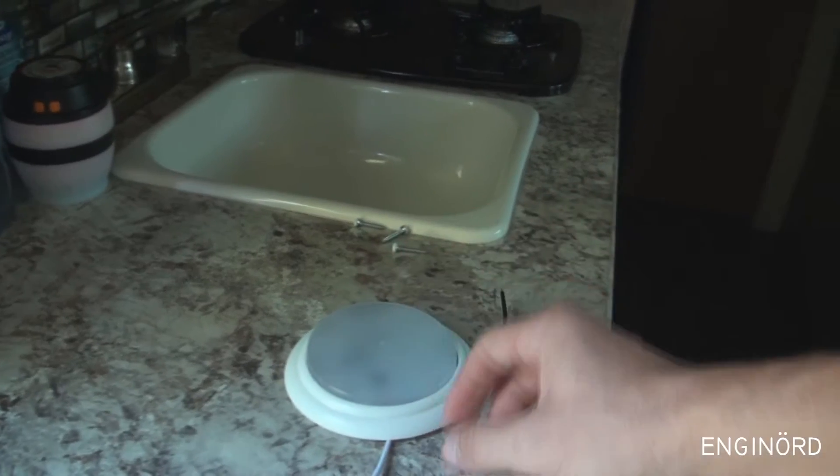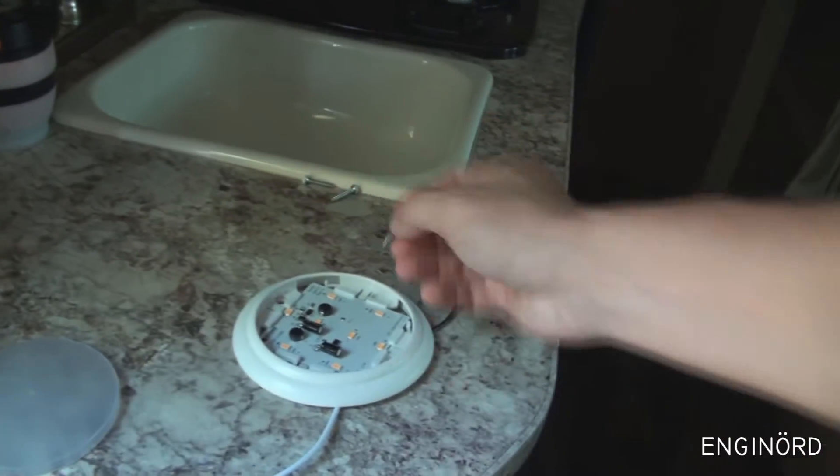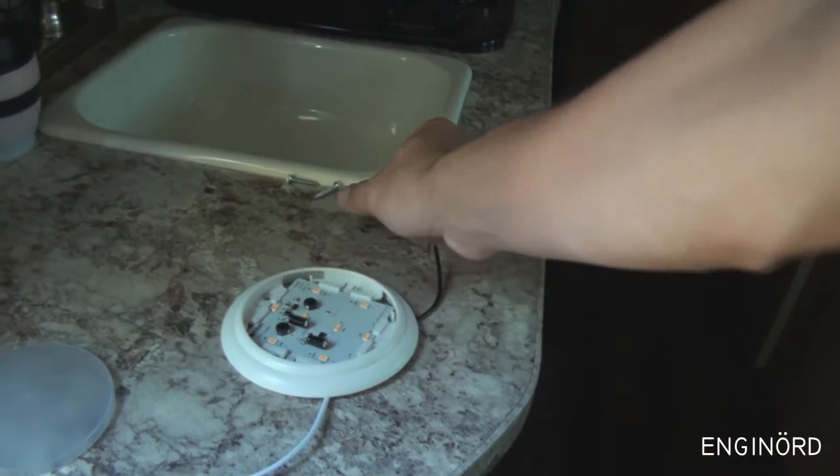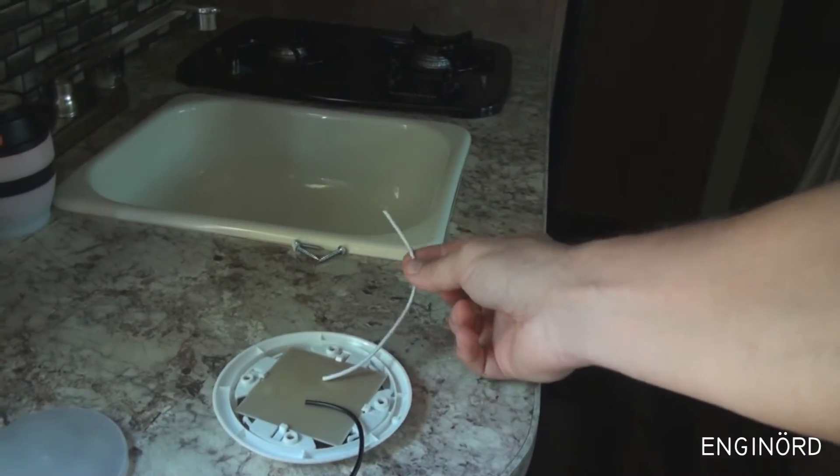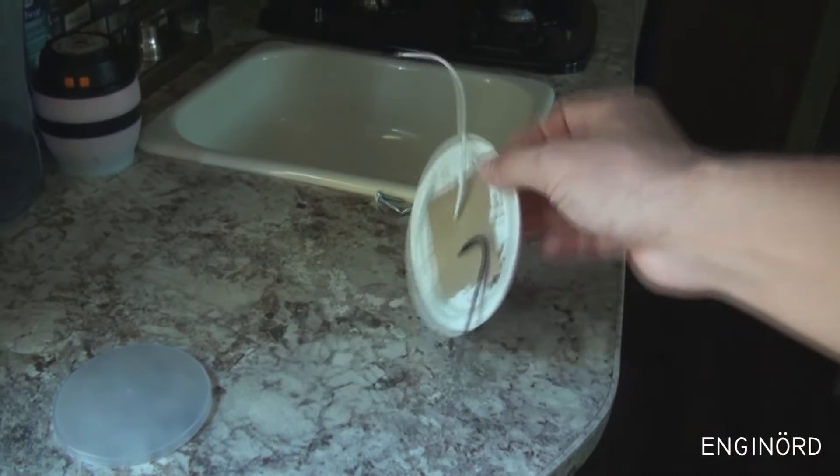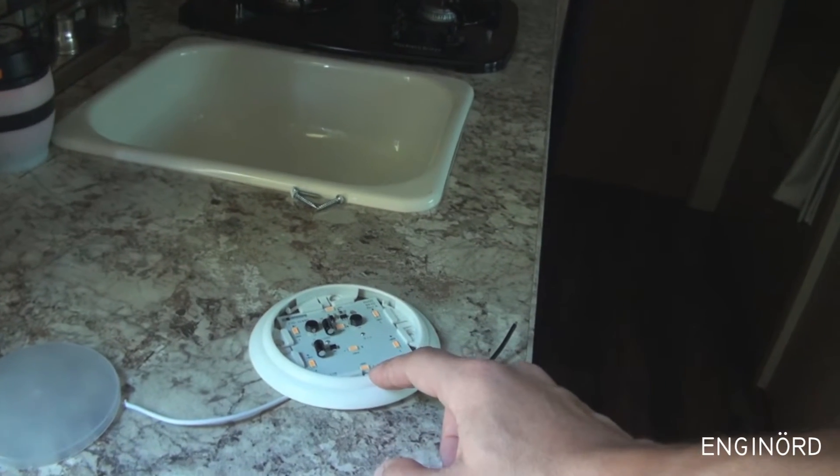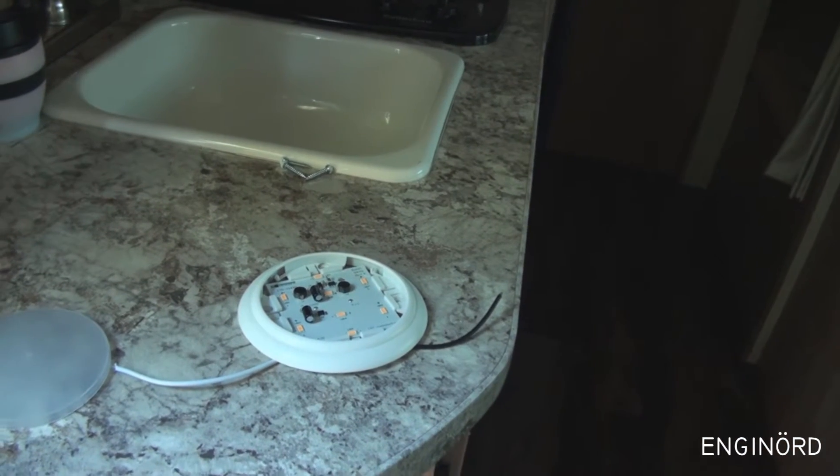So you can take a screwdriver and pry it out and then this cover comes out. And then once you remove the cover there are four bolts here and you can remove the four bolts, this comes off and then just disconnect it and then you can go and replace it. What we're going to do is we're going to see if we can troubleshoot these and look inside see what kind of parts are there.